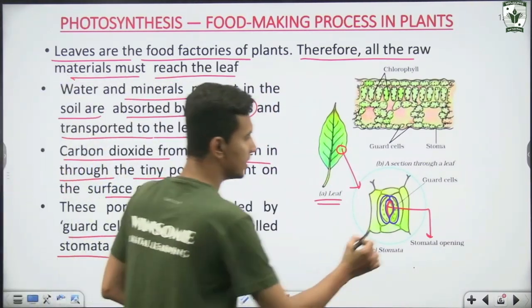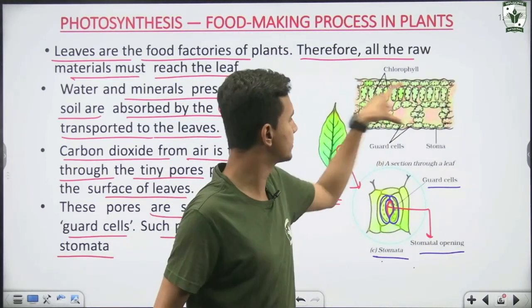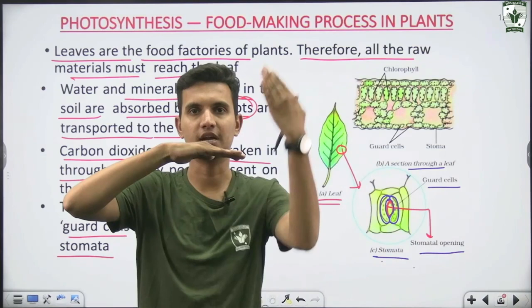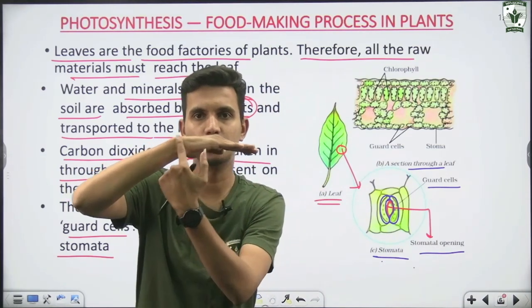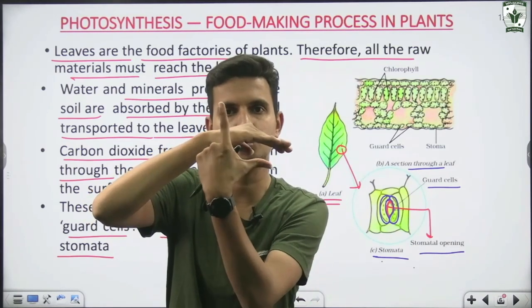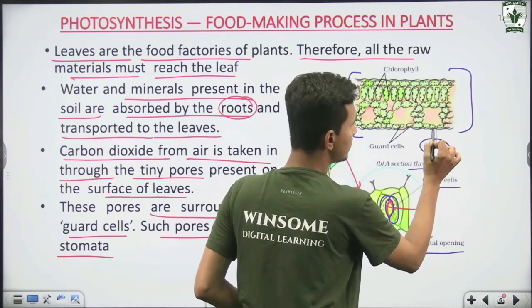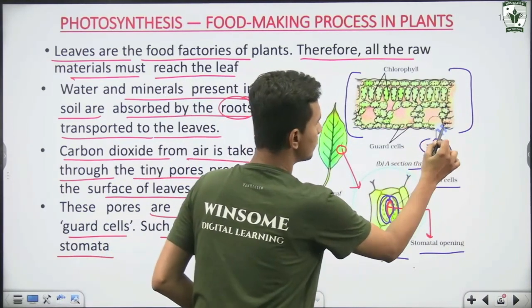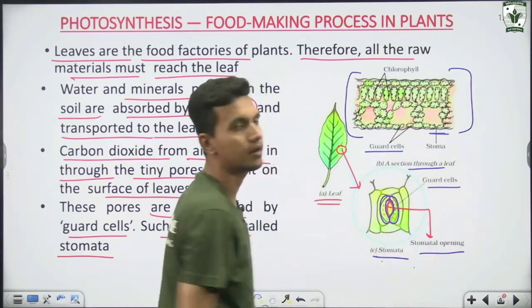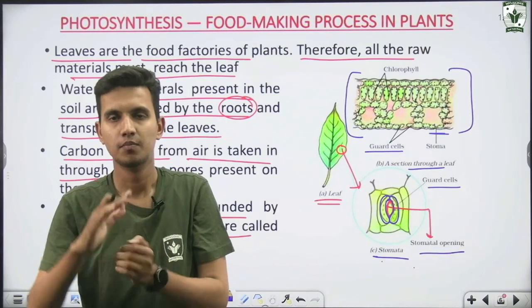Let's look at the stomata structure. This is the stomatal opening shown on a longitudinal section of the leaf. If you look at the leaf under a microscope, at the bottom you can see tiny pores — these are the stomata. The stomata are on the lower surface of most leaves. The guard cells are visible around the stomatal opening on the leaf surface.